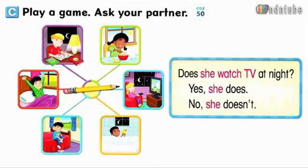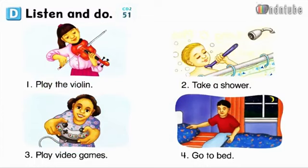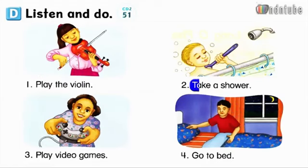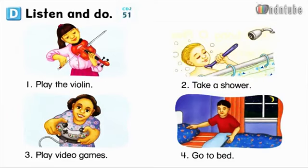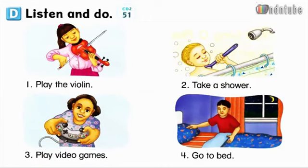Page 63. D. Listen and Do. Number 1: Play the violin. Number 2: Take a shower. Number 3: Play video games. Number 4: Go to bed.